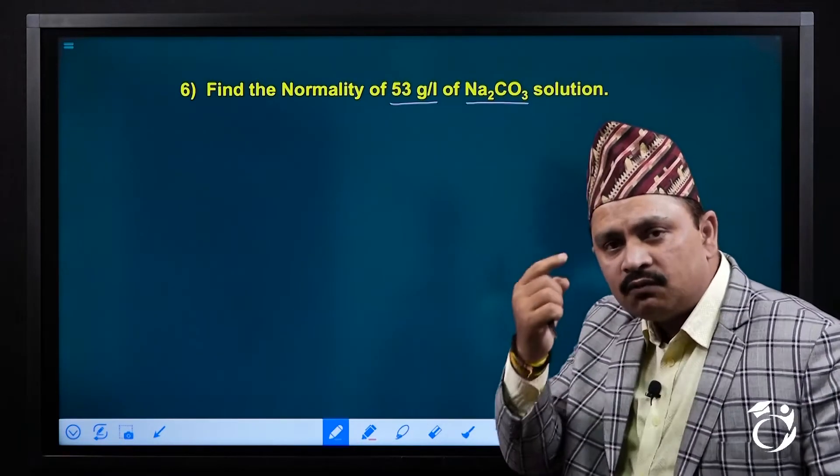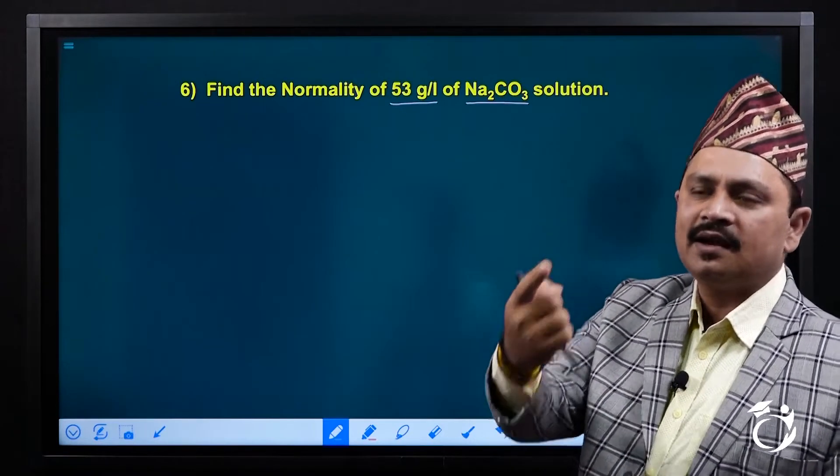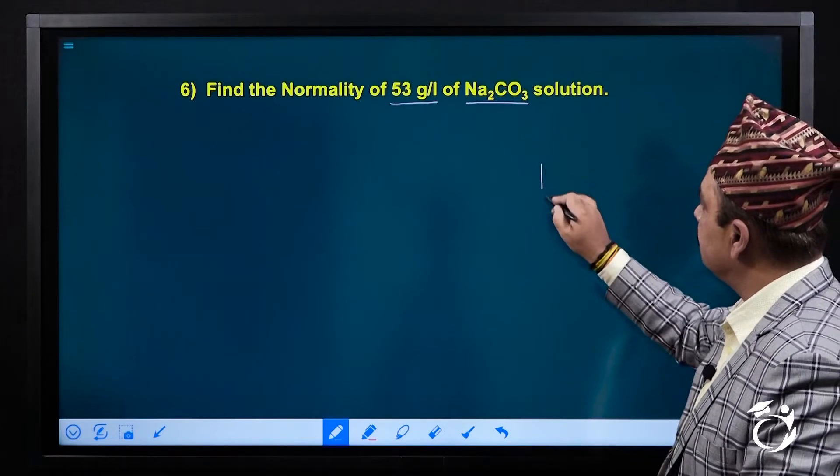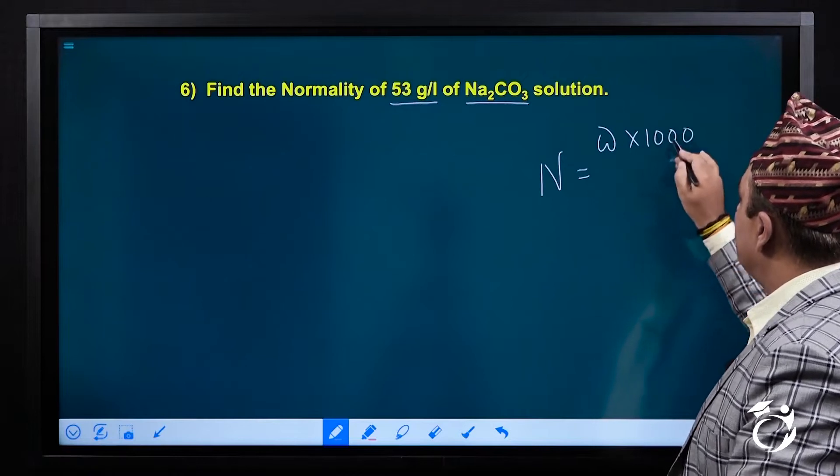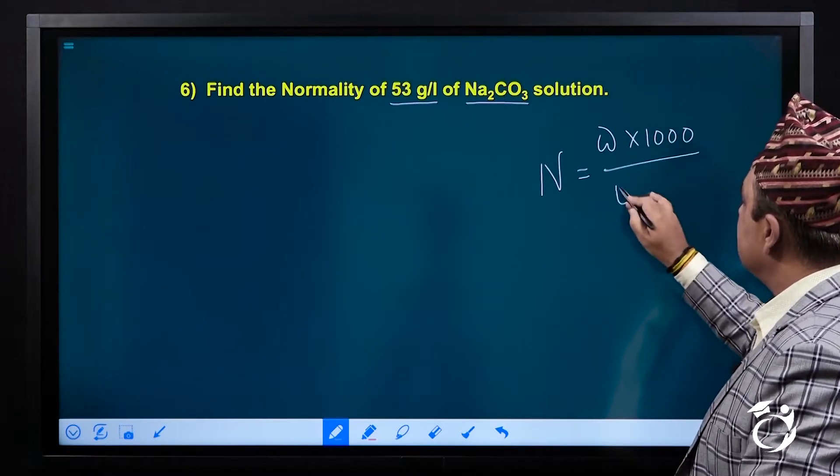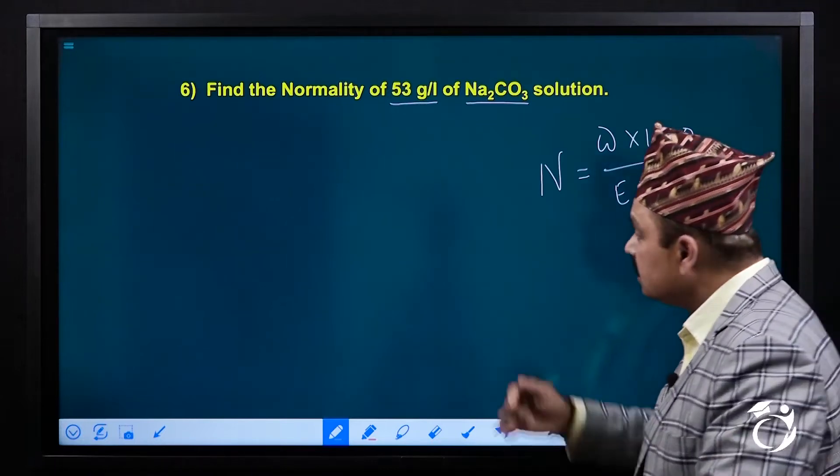If there is only one compound given in the question, we have to use single relation. Single relation being normality equal to W into 1000 upon E into V. What is the question?